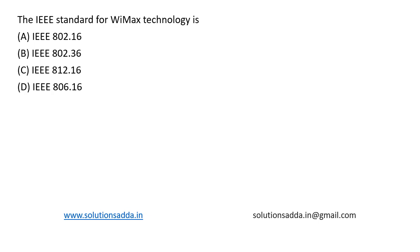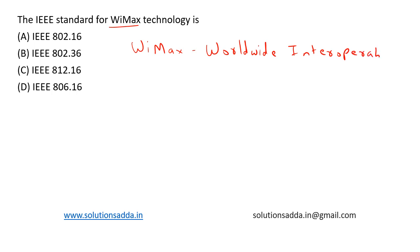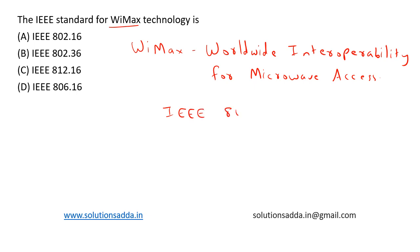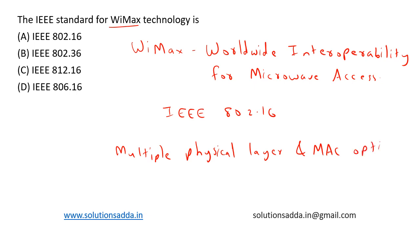This is a question from Computer Networks. The IEEE standard for WiMAX technology is — WiMAX stands for Worldwide Interoperability for Microwave Access. It is a family of wireless communication standards based on the IEEE 802.16 set standard. It provides multiple physical layer and media access control options. So option A, 802.16, is the right choice.